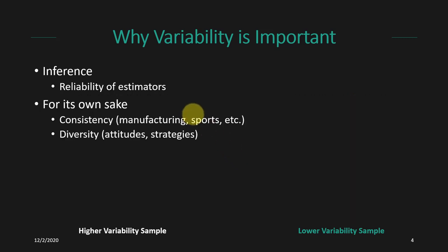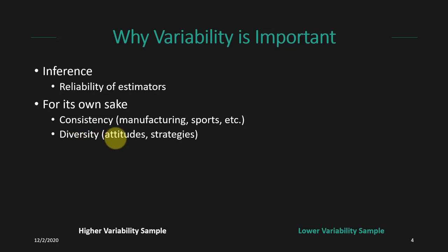Variability is also important for its own sake. When it comes to things like manufacturing or sports, we might be really interested in consistency and trying to reduce variability — getting the exact same product made over and over again, or having exactly the same form for a free throw. Alternatively, at times we don't necessarily want to reduce variability but want to accurately describe it, such as when capturing the attitudes of a group. This is why measures of variability are equally important as measures of central tendency in describing our sample and in calculating inferential statistics.